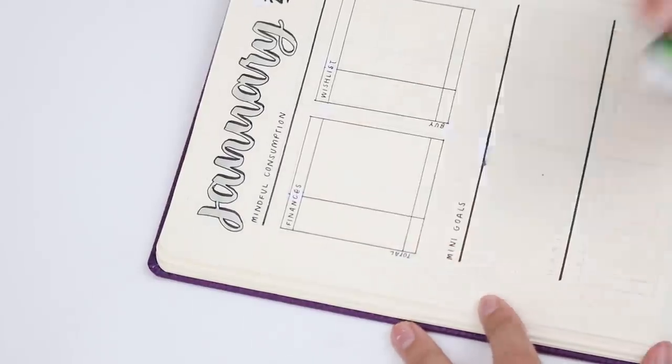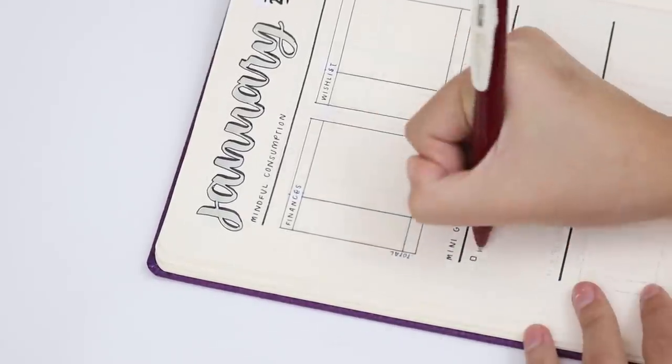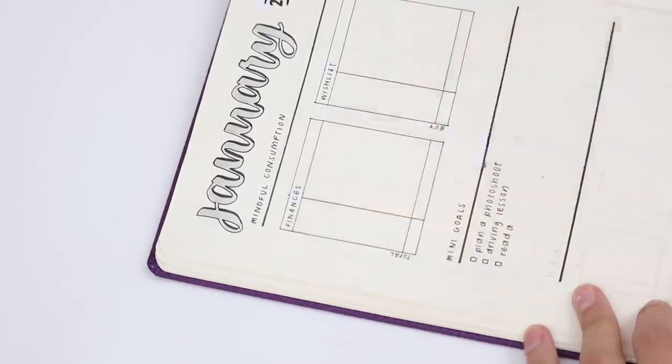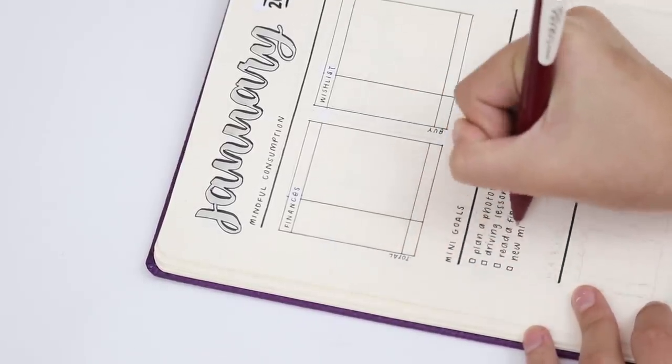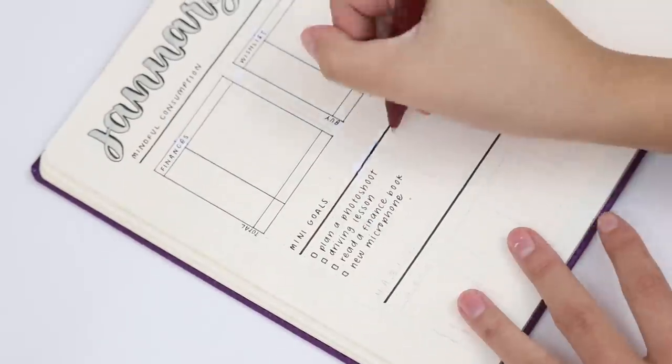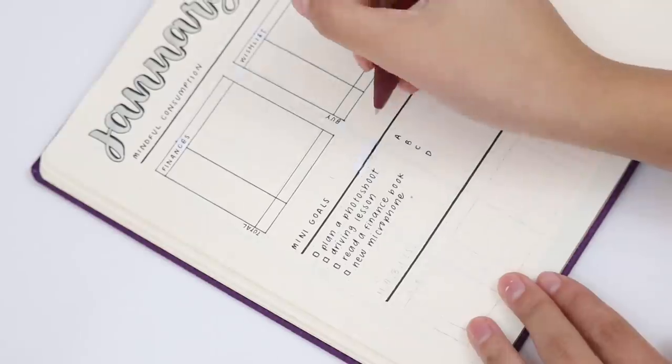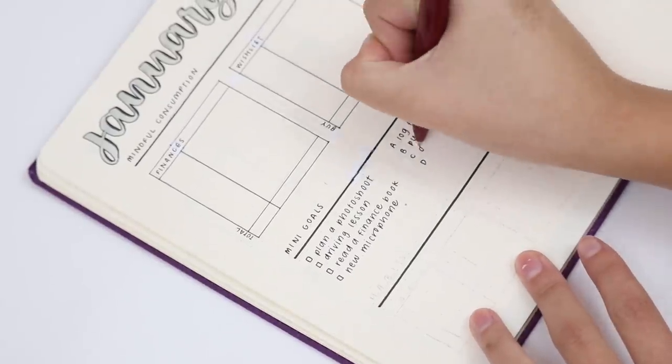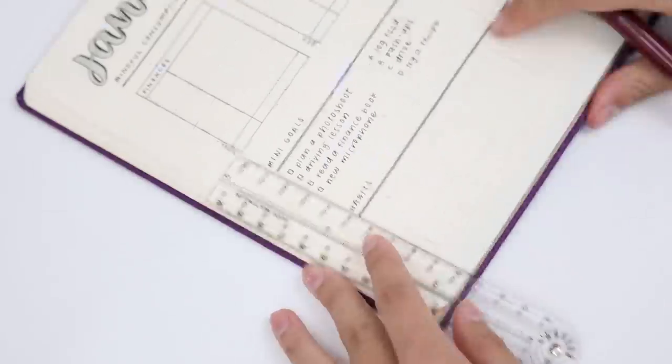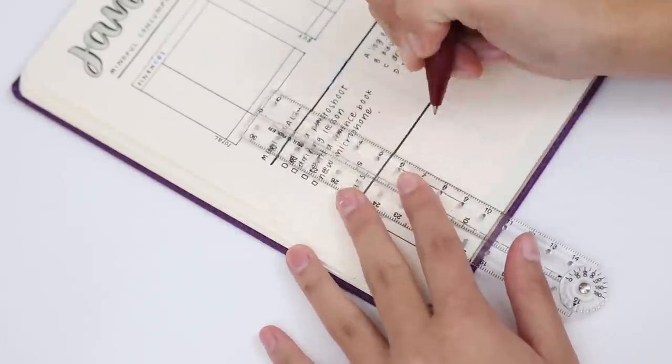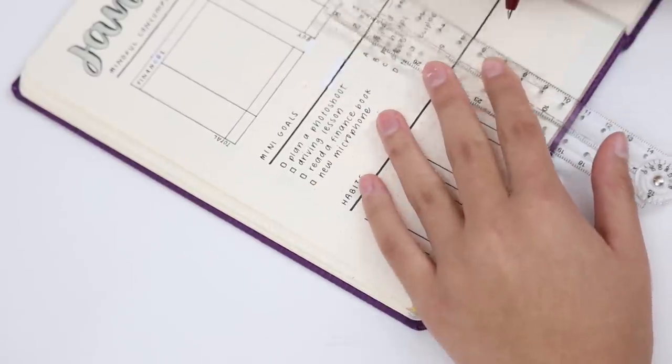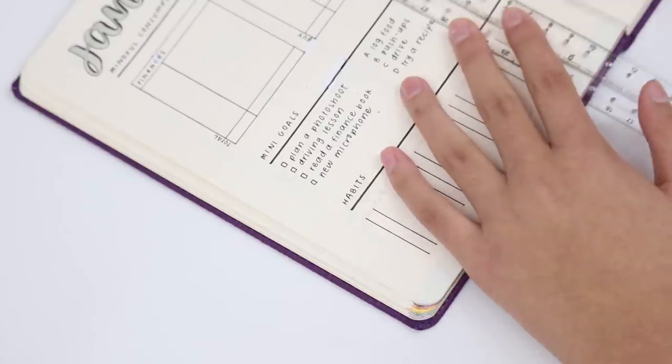Besides the title, the only things on this page are this set of two tables that I'm titling mindful consumption. One of them is for me to track my finances and the other is for me to track a wish list because this year I'm going to try to only buy one unnecessary item per month to limit my spending and the amount of mental energy I put into acquiring stuff which I feel is far too much considering how little stuff I actually need.